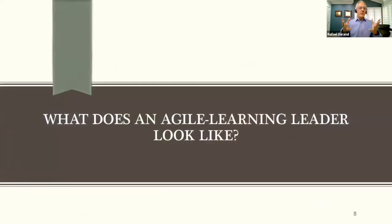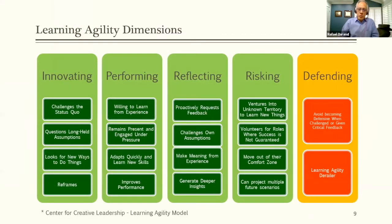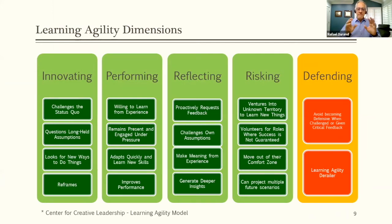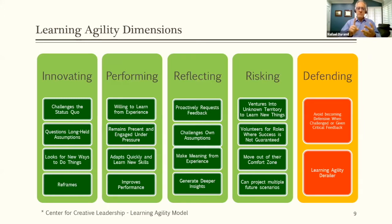What does a natural learning leader look like? In 2014, the Center for Creative Leadership and Columbia University conducted the most recent study on learning agility — conducted on a worldwide basis across organizations of all natures and sizes. They identified five dimensions that define a learning-agile leader: innovation, performance, reflection, risking, and defending.